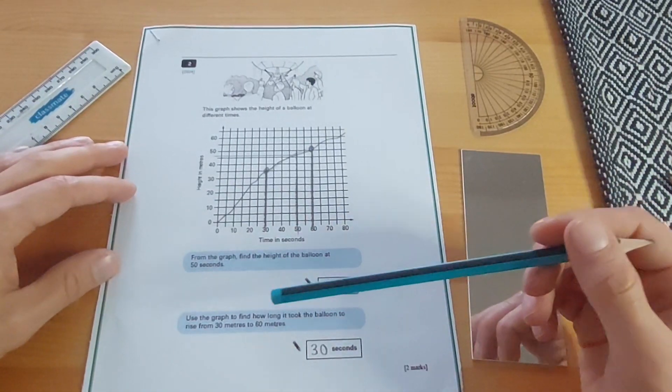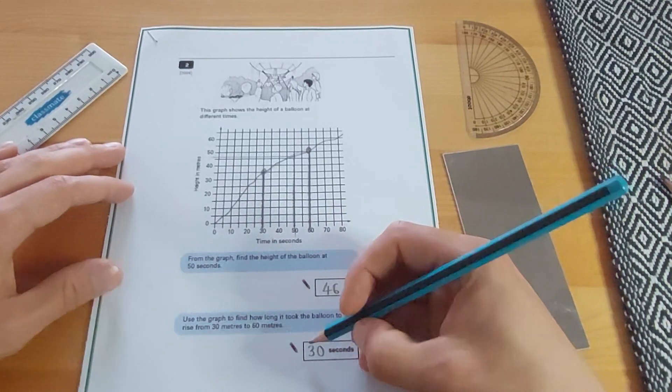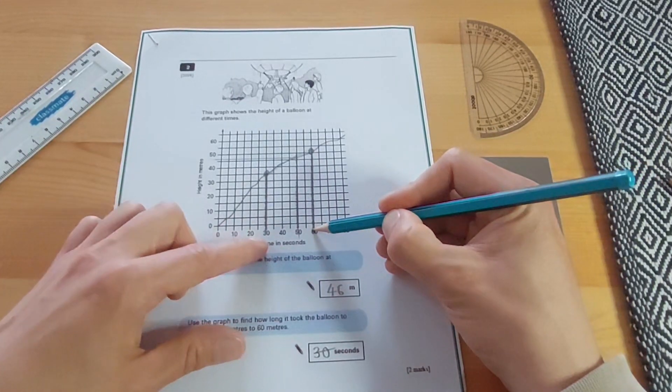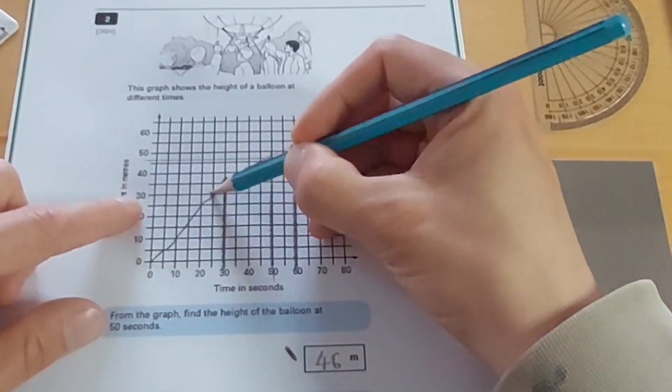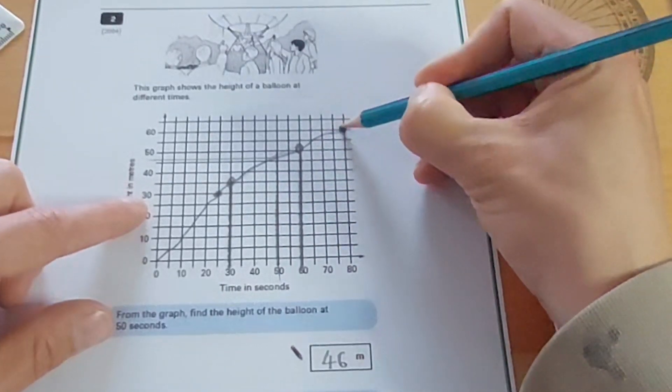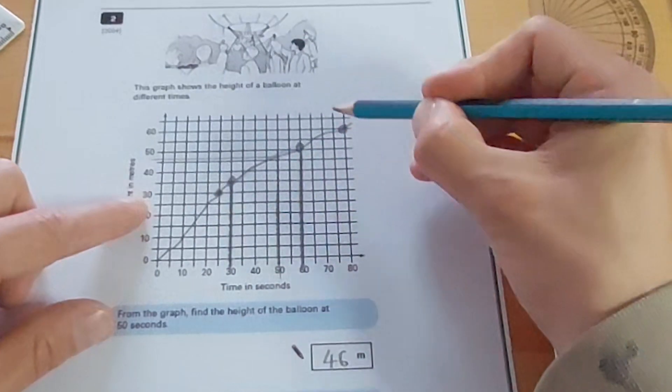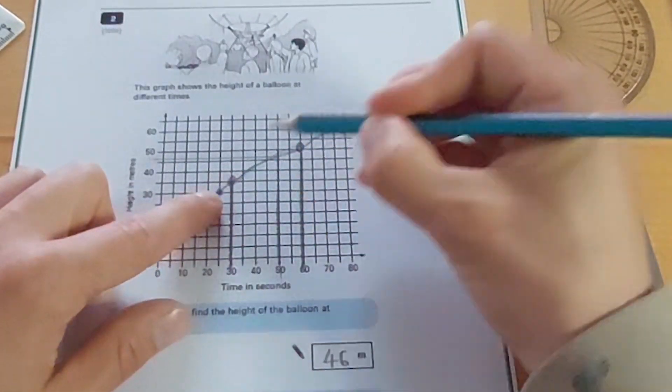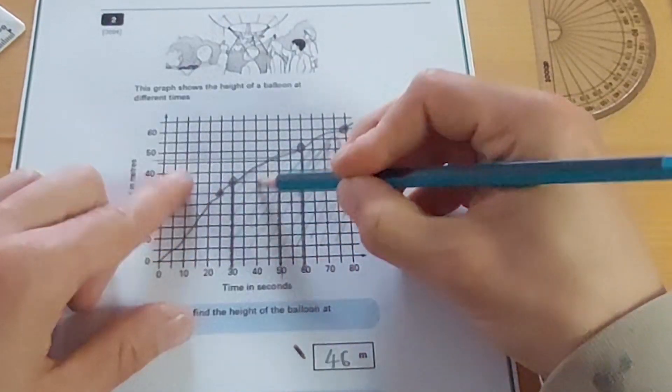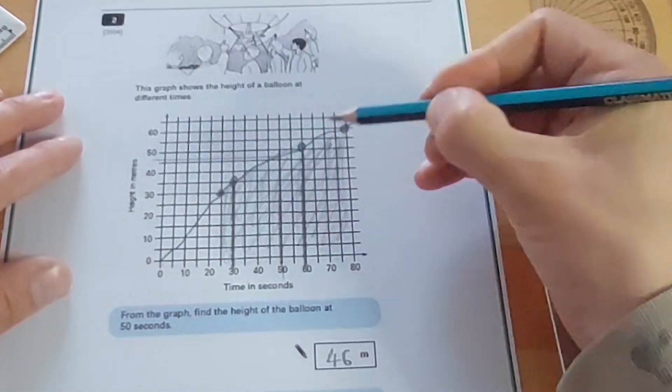The second part of the question says, use the graph to find how long it took the balloon to rise from 30 meters to 60 meters. An easy mistake to make is to think that we're looking at 60 here. Well we're not, because this is the time, and it's asking us how long did it take to get from 30 meters, which is here, to 60 meters, which is where did it reach 60 meters? It reached 60 meters here. So I'm not looking at this space here between 30 and 60 seconds. I'm actually looking from this point to this point, how long did it take to get from there to there, which is all of this space here, from there all the way to there, because that's where it started at 30 meters and it got to 60 here.